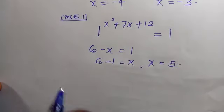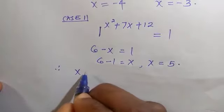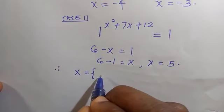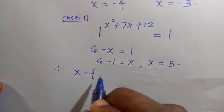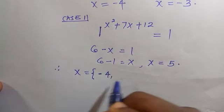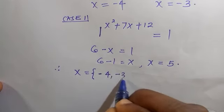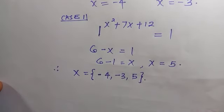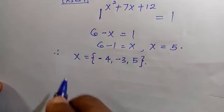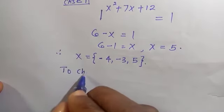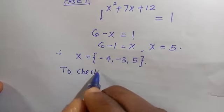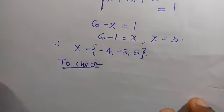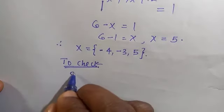So all the roots are: x = -4, x = -3, and x = 5. We are now going to verify if all these roots satisfy the given equation. Let's start with x = -4.